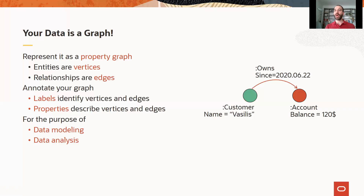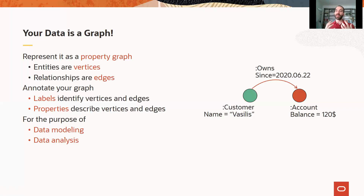The reason why you would like to represent your data as a graph is that very likely it already looks like a graph. So in this example, we have a banking application where the data contains vertices that are connected together with edges, just as in a graph. Another very well-known example is the Facebook graph, which contains people connected together with friendship relations. So if your data already looks like a graph, you might very well model it as a graph and then get the benefits of nice visualization, intuitive representation, and very powerful data analysis.